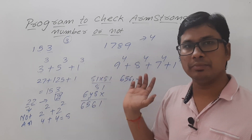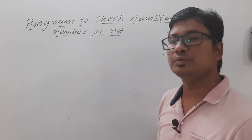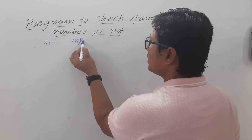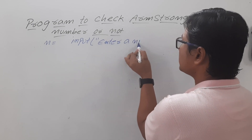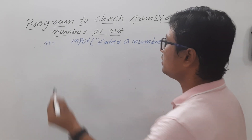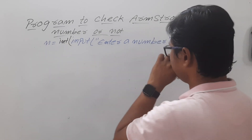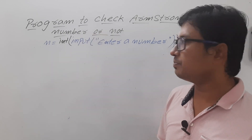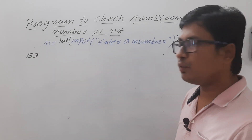This is the way you can verify whether a given number is an Armstrong number or not. Now let me discuss how to write the Python program. I will ask the user to enter a value: n = int(input('Enter a number')). The input function returns a string, so I am doing typecasting to convert it to an integer. This program can be done in two ways.